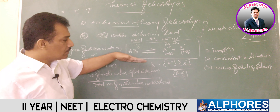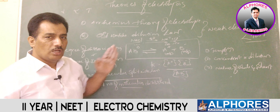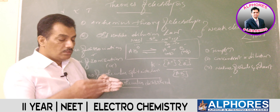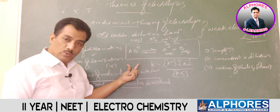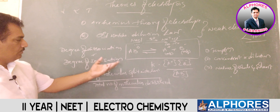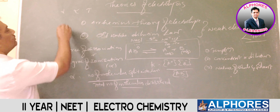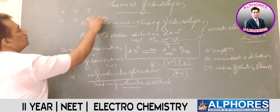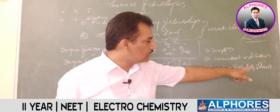When more solvent is added, the number of undissociated molecules decreases as more ionization takes place, while the number of ions increases. Therefore, the degree of dissociation is proportional to dilution — with increasing dilution, degree of dissociation increases.